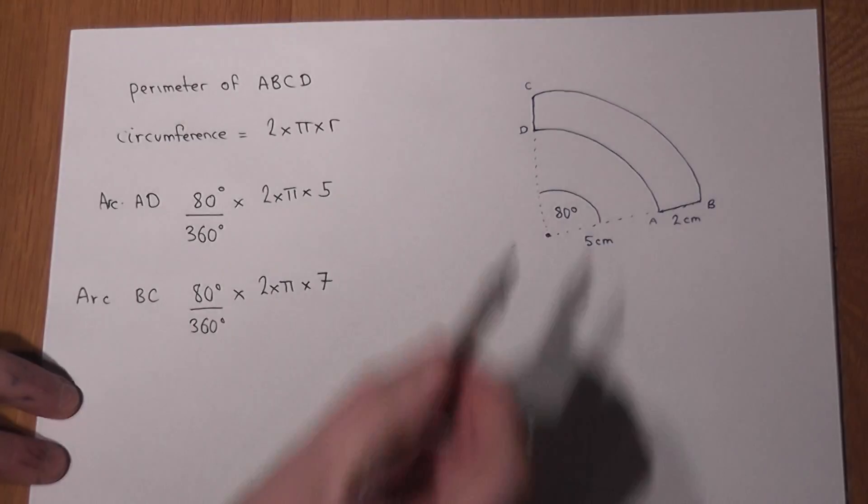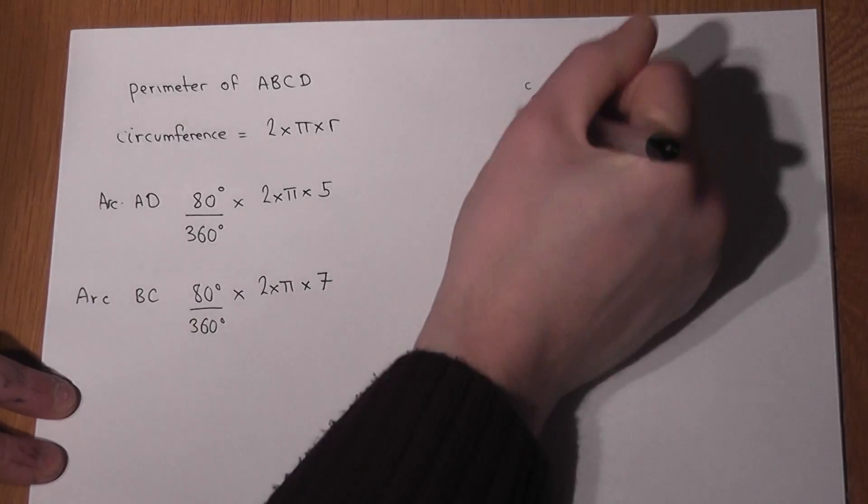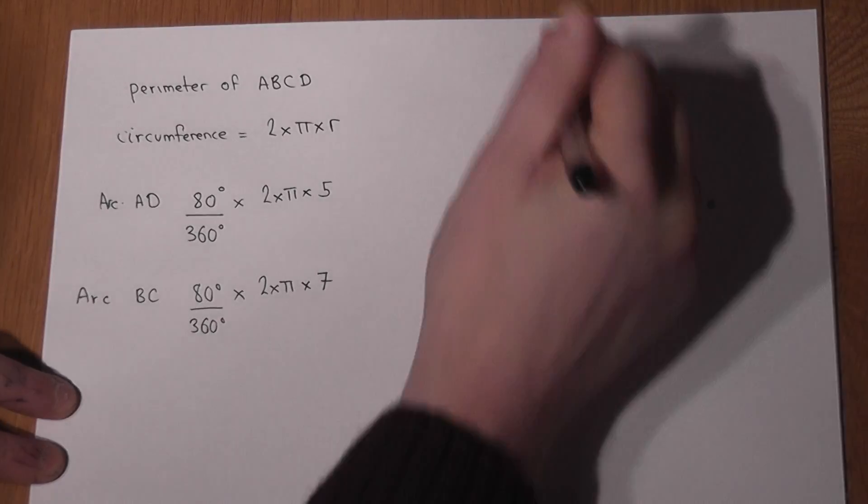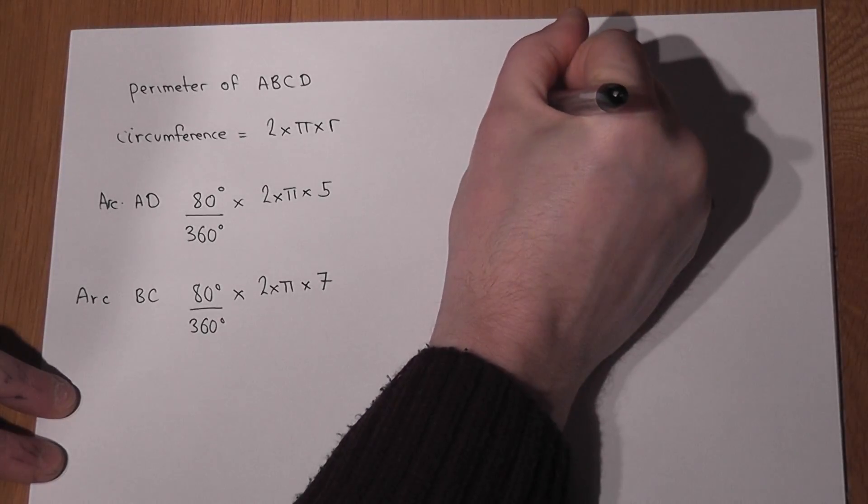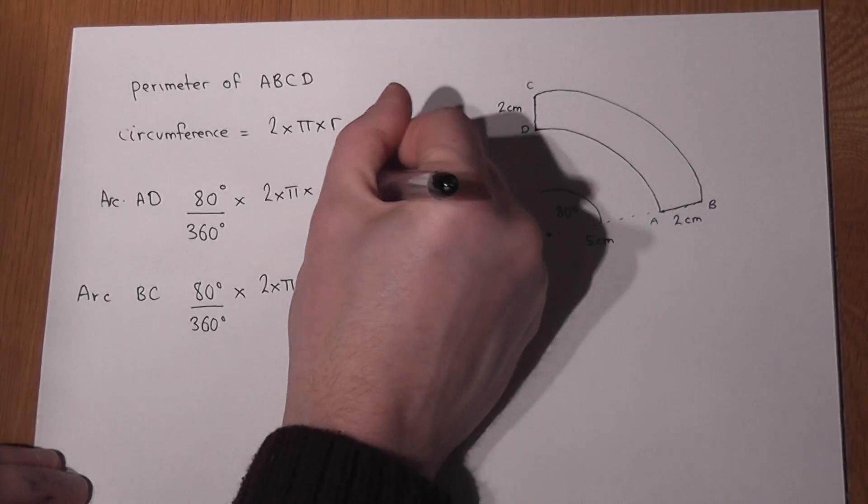So to find the perimeter, it'll be this length plus this length plus the two straight edges, that's 2. This will also be 2 by symmetry. So here we go. Now 80 divided by 360 times 2 times pi times 5 works out to be 6.981cm to 3 decimal places.